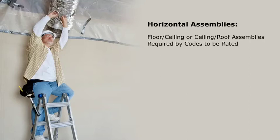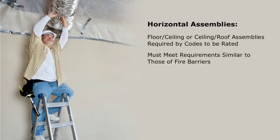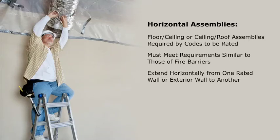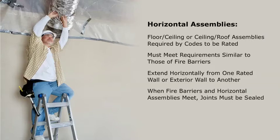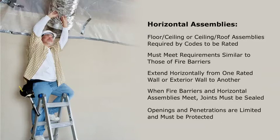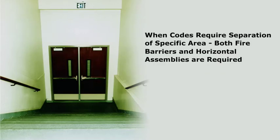Floor, ceiling, or roof assemblies required by the codes to be rated are referred to as horizontal assemblies. They serve the same function as fire barriers but are horizontal building elements. Horizontal assemblies must meet requirements similar to those of fire barriers, extending from one rated wall or exterior wall to another. Where fire barriers and horizontal assemblies meet, the joints must be sealed, and openings and penetrations are limited and must be protected.